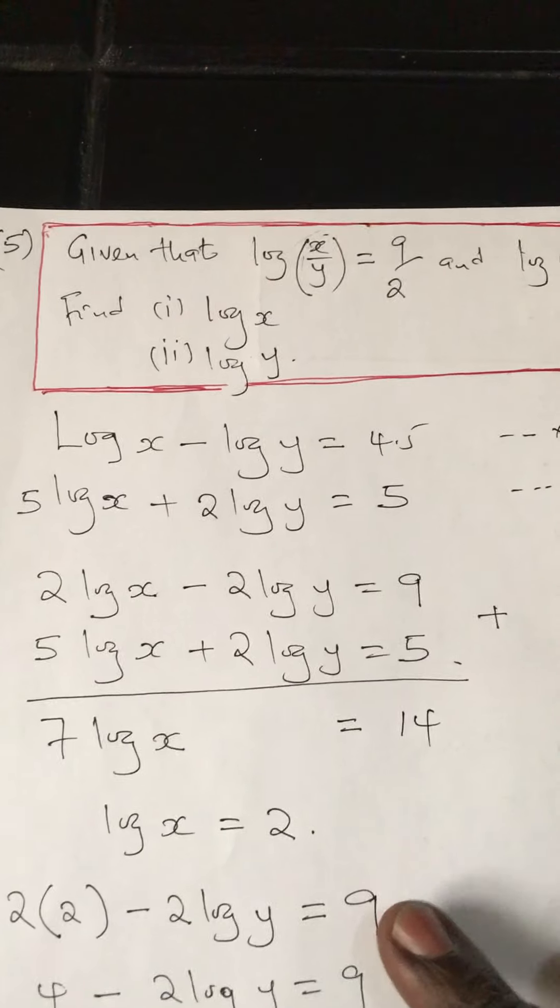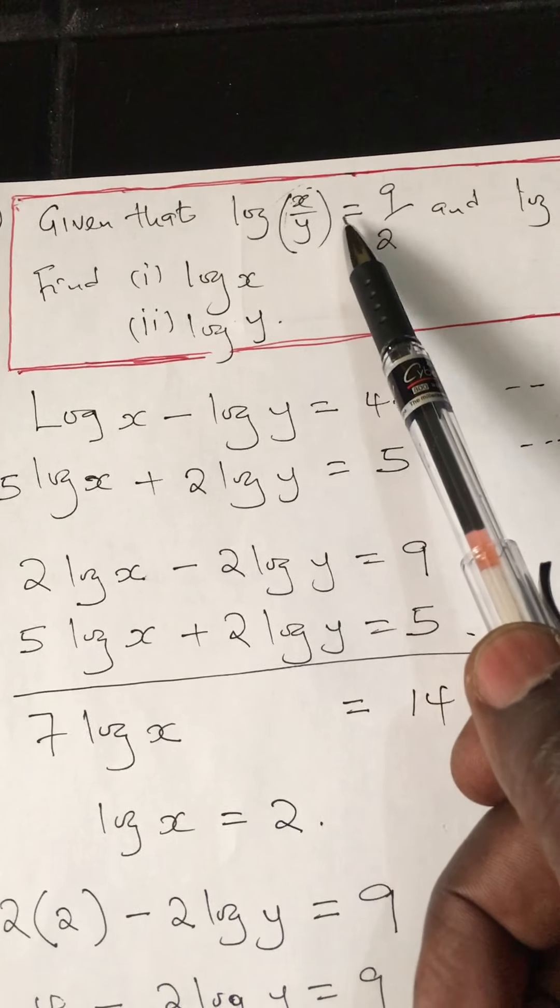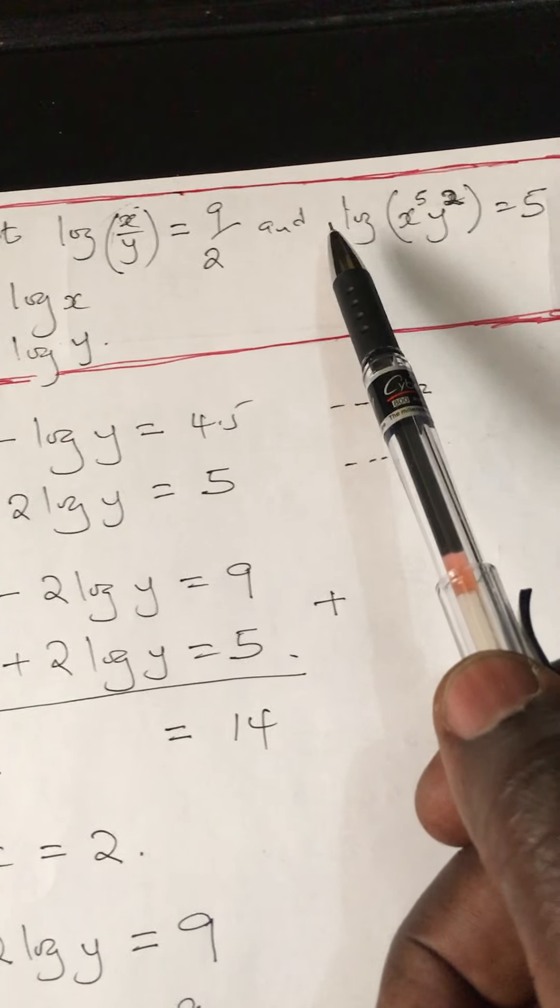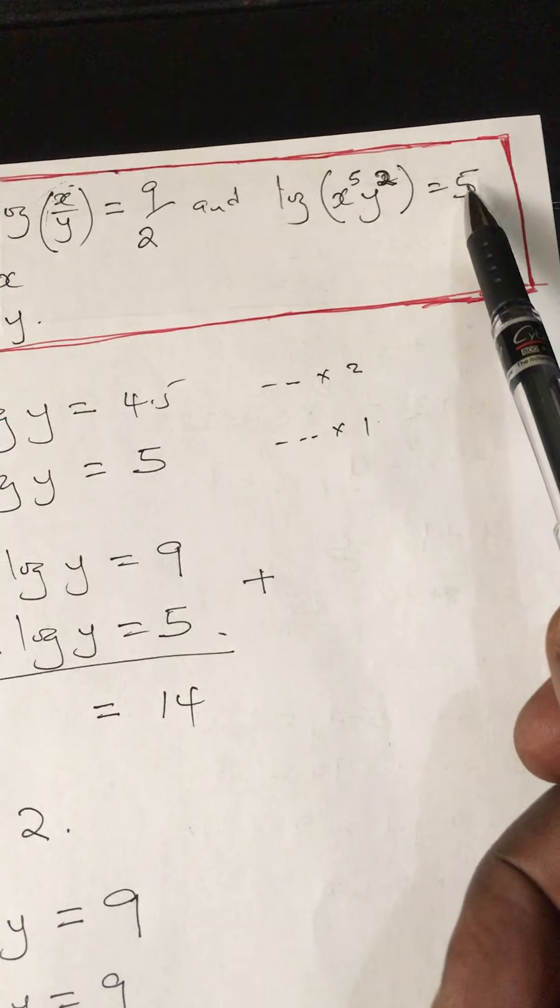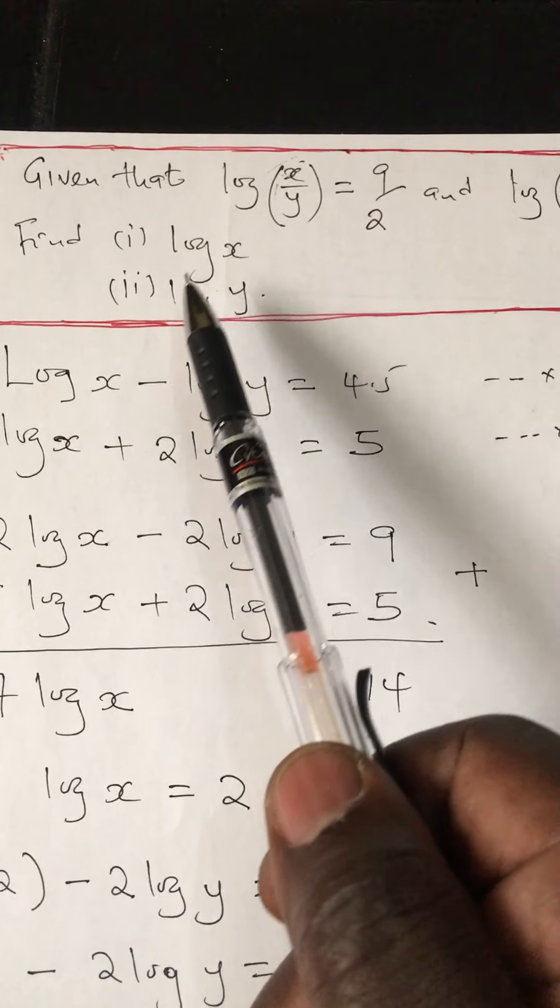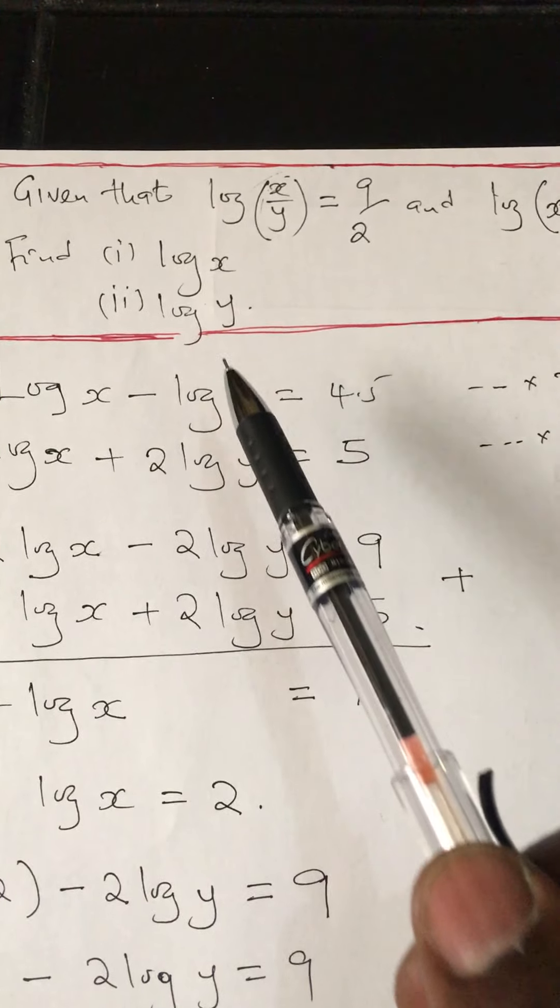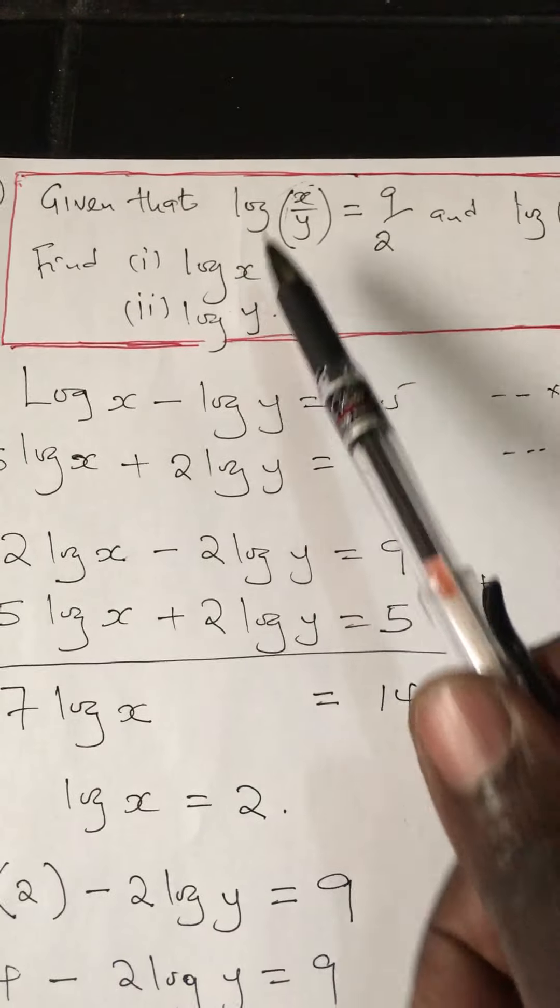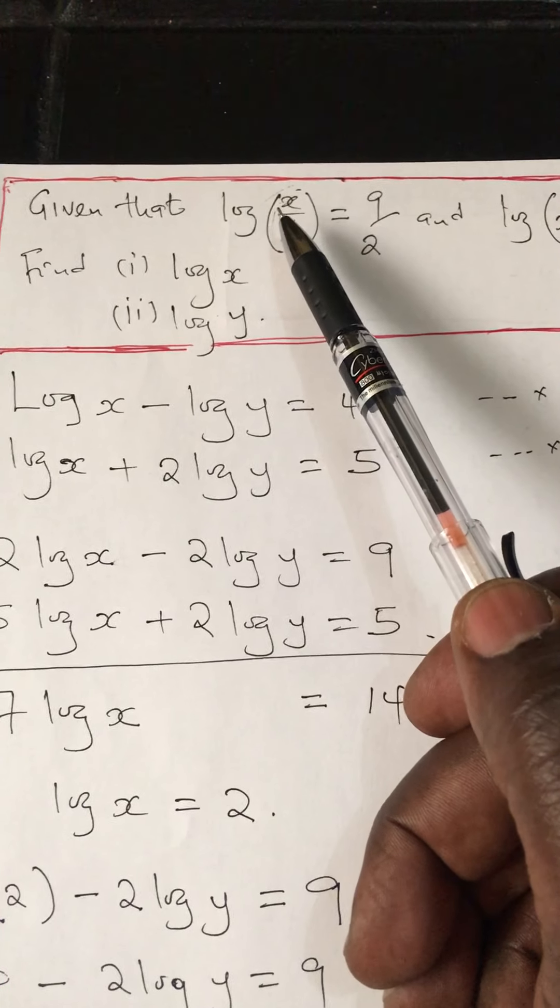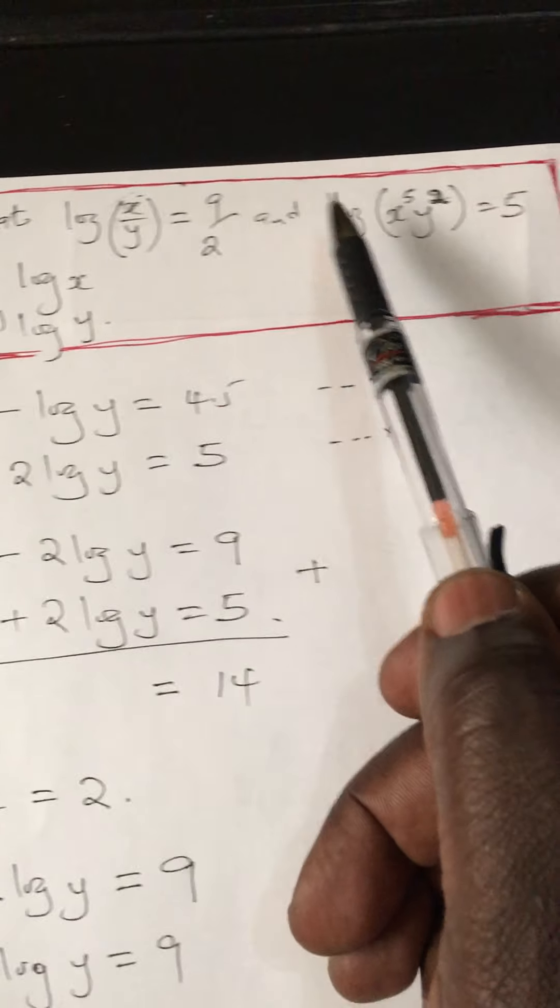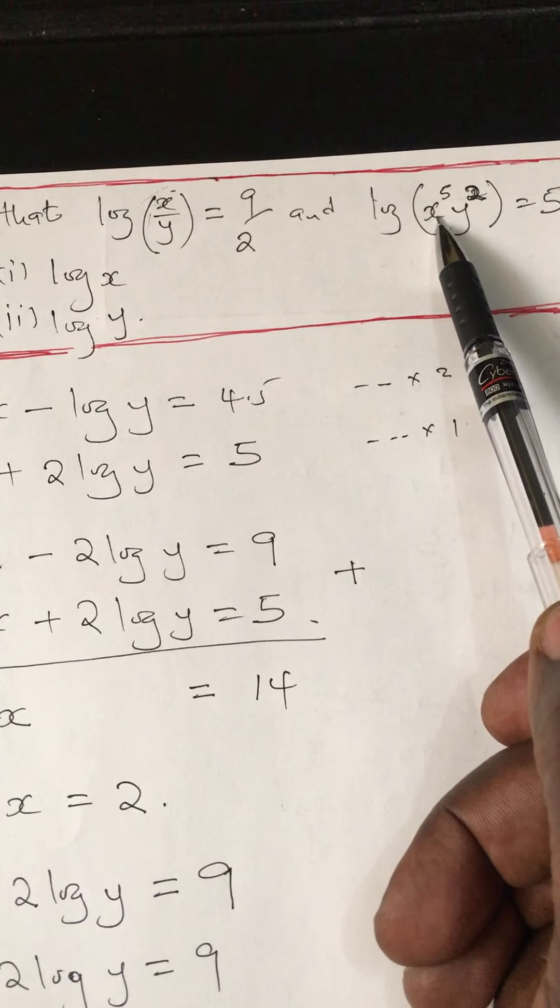Number 3 question is: given that log x over y equals 9 over 2, and log of x raised to 5 times y squared equals 5, you're supposed to find the value of log x and log y. This question takes you back to those normal laws. When you see divide in logs, you split this by bringing in a negative sign between the logs. When you see multiply, you split this by bringing in the addition sign.